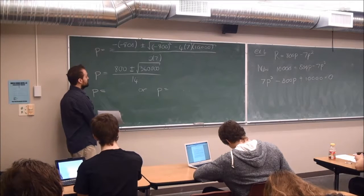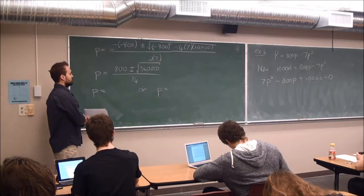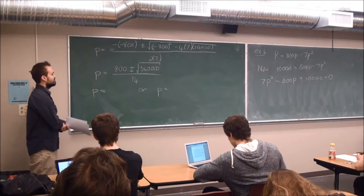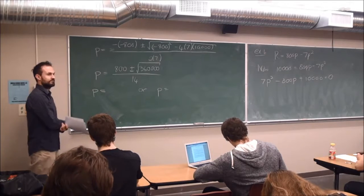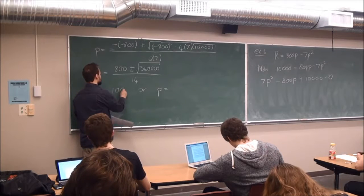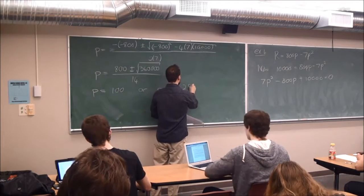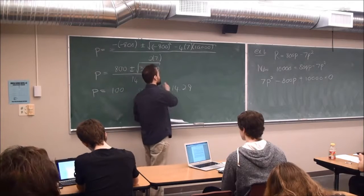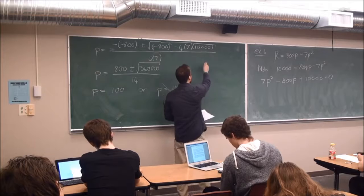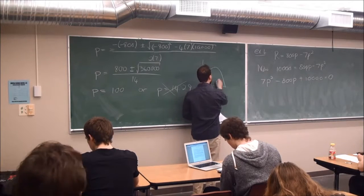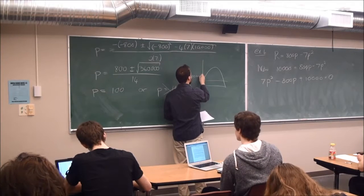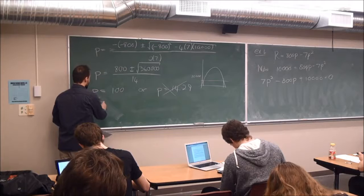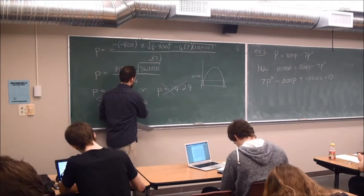So now I have the values. The first one is equal to 100 and the other one is 14.29. Now the reason they tell me at the end of that question that I want the price to be greater than 50 is just to rule this out. What's happening is I have a revenue function and there's a line here somewhere that gives me the $10,000 mark and there are two positions where that happens. A small price and a bigger price. So I want the price to be $100.